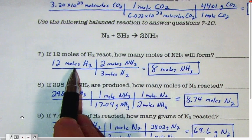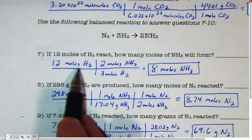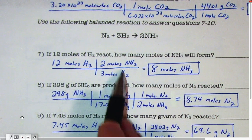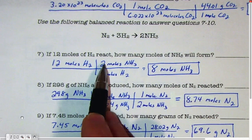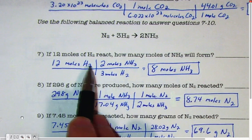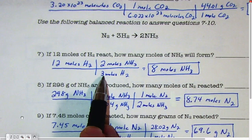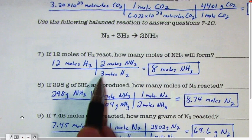Well, if you have 12 moles of H2, you need to go from moles of H2 to moles of NH3. So you're actually, you have a ratio here. You're multiplying by a top number, dividing by the bottom, it's kind of like a fraction, two-thirds in this case.